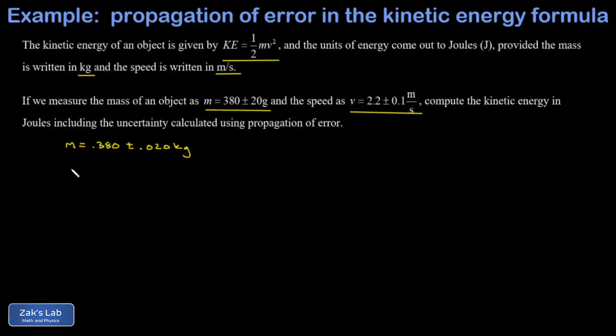The speed is measured to be 2.2 ± 0.1 meters per second. I want to get the kinetic energy, which is just a matter of plugging into the formula, but I also want to compute the uncertainty in the kinetic energy properly by using the propagation of errors formulas. So we'll start out by getting the kinetic energy—that's ½mv².